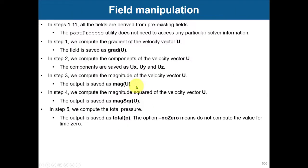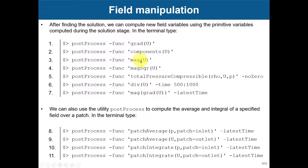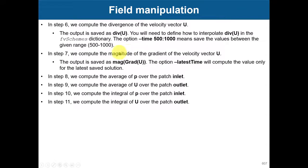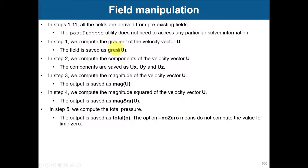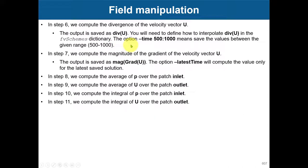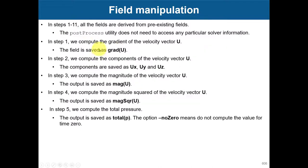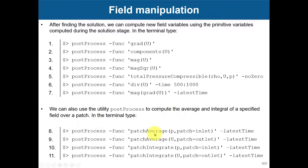For instance, if you want to compute the divergence of U, you need to define it in `fvSchemes`. Some of these quantities require you to specify how to discretize them in `fvSchemes`. The same applies to gradients — you need to tell how to discretize them. If you use the default options there is no problem, but be careful: some options require adding entries in `fvSchemes`.